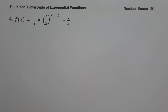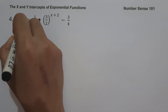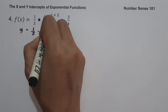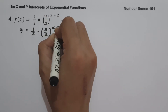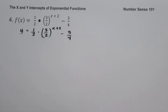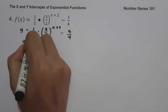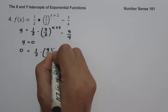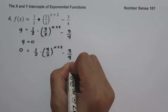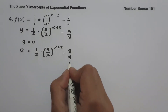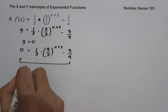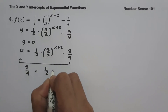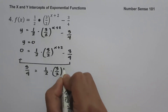On example number 4, f(x) equals one-half times 3 over 2 raised to x plus 2 minus 3 over 4. Changing f(x) into y: y equals one-half times 3 over 2 raised to x plus 2 minus 3 over 4. To find the x-intercept, set y equal to 0, then move negative 3 over 4 to the side of 0, giving 3 over 4 equals one-half multiplied by 3 over 2 raised to x plus 2.